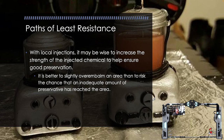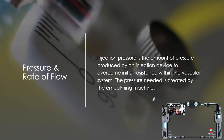There is no one positive test for determining if a body area has sufficient arterial solution. If there is any doubt about solution distribution, you should raise an artery in that area and sectionally inject it, then follow up with hypodermic or surface embalming if necessary. With local injections, it may be wise to increase the strength of the injected chemical to help ensure good preservation. It is better to slightly over-embalm an area than to risk inadequate preservation — when in doubt, go a little bit stronger. Make sure it took the first time and that will prevent complications and lawsuits.